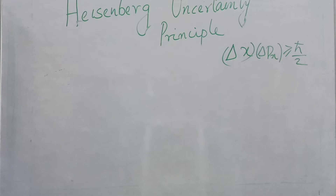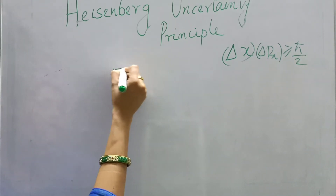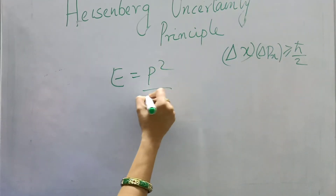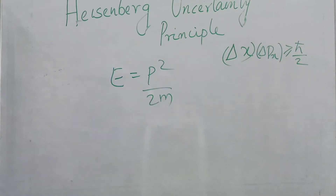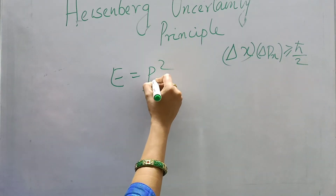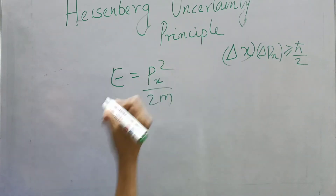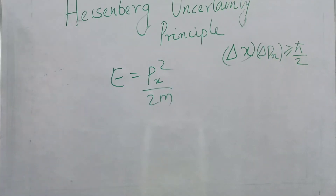We have a free moving particle of mass m along the x-axis. The energy is given by E = p²/2m, where p is the momentum and m is the mass. Since it is moving along the x-axis, we can denote it as E = px²/2m.